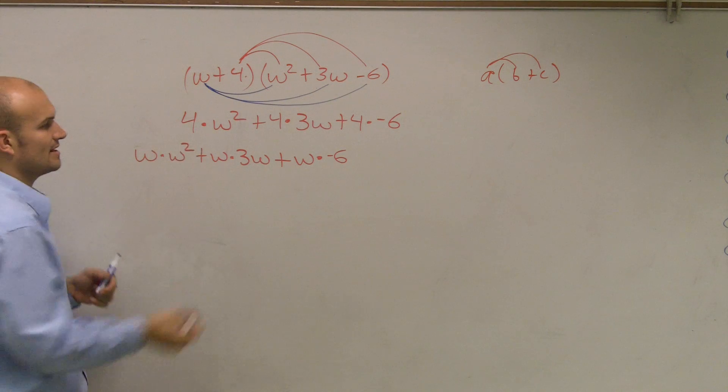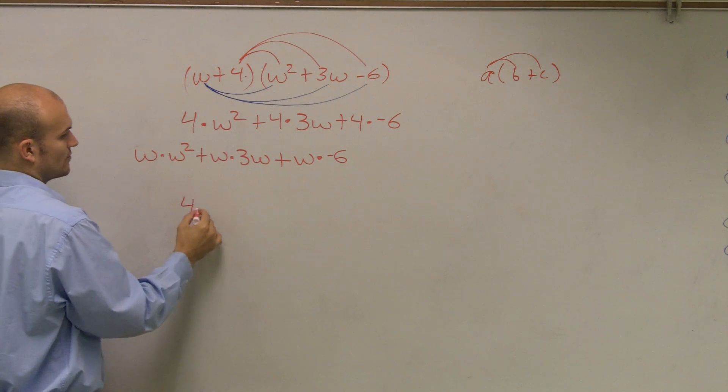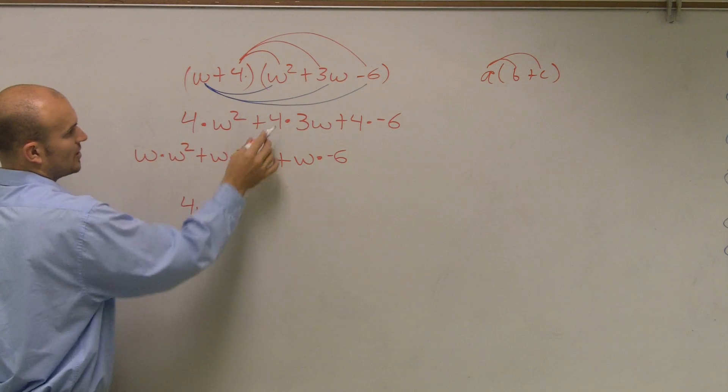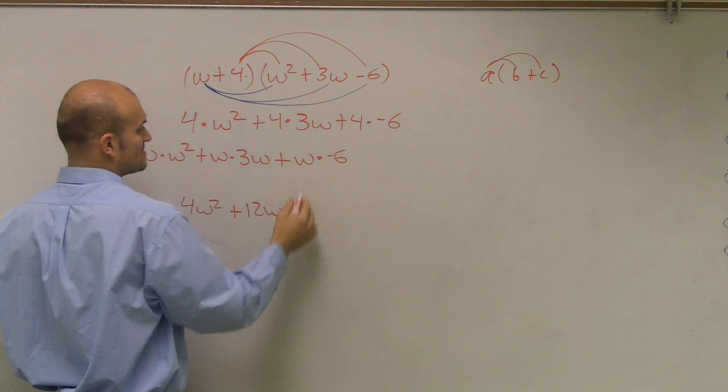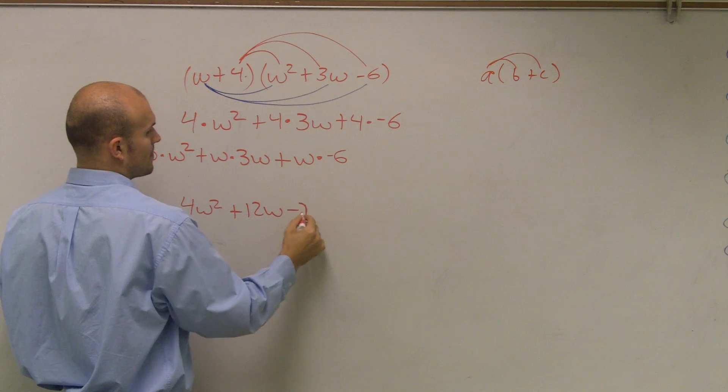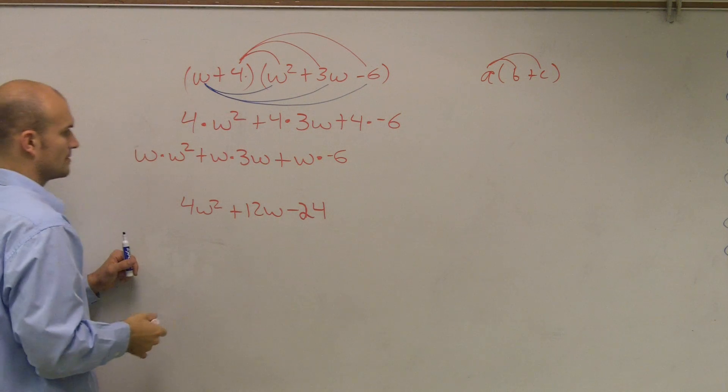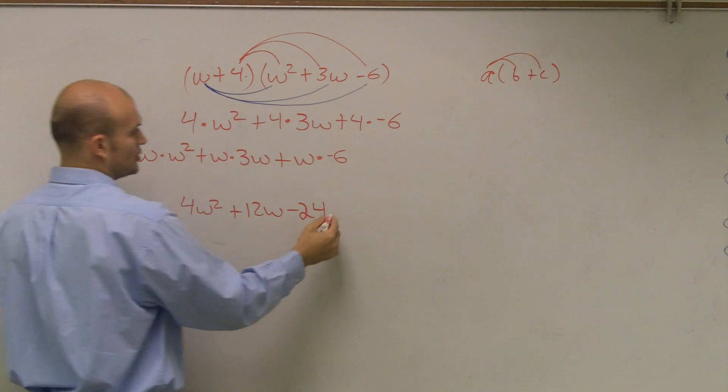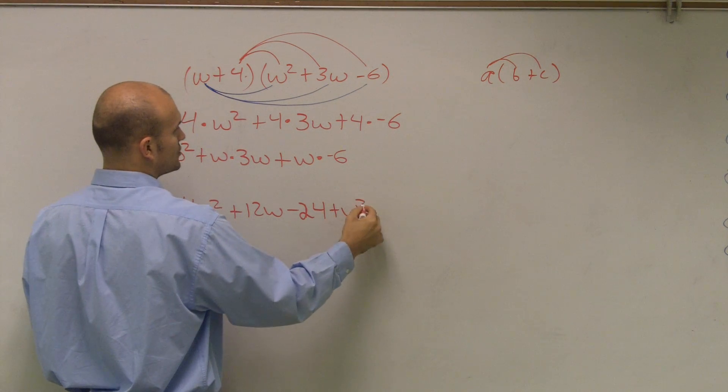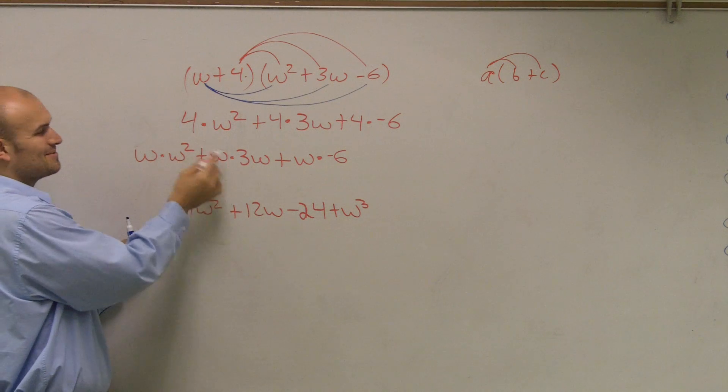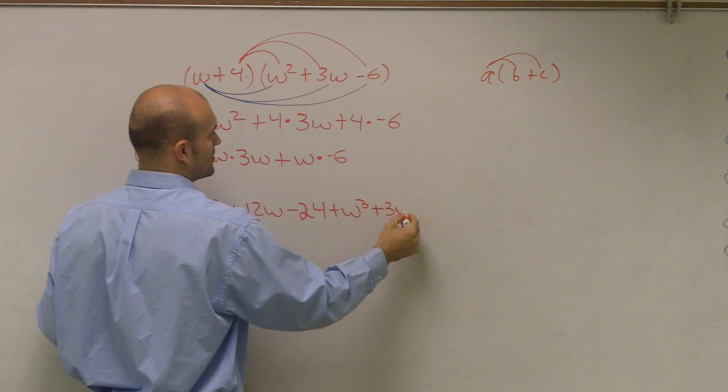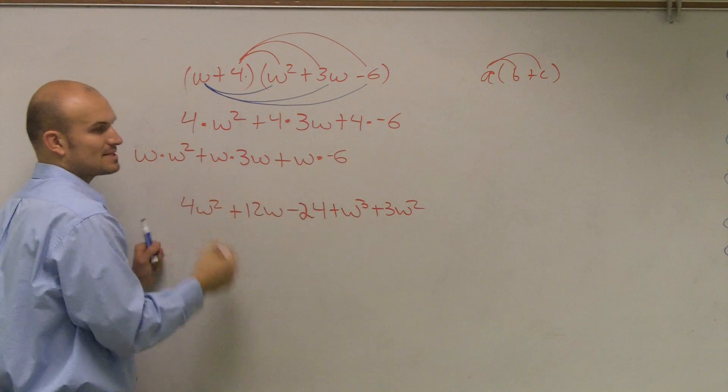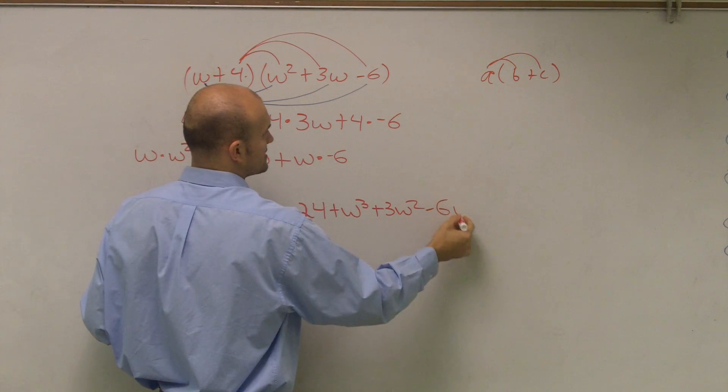So let's just go and rewrite these out. Now, 4w squared is 4w squared, plus 4 times 3w is 12w, plus 4 times negative 6 is negative 24. Then, w times w squared is going to be a positive w cubed. W times 3w is going to be a positive 3w squared, and w times a negative 6 is going to give you negative 6w.